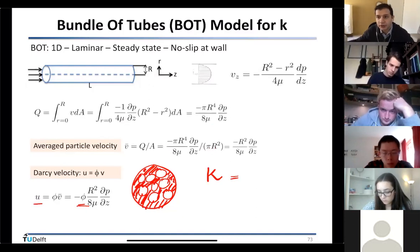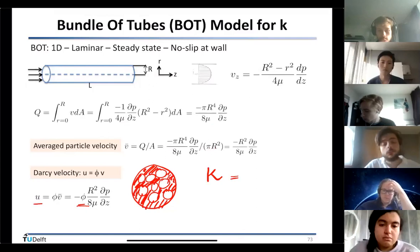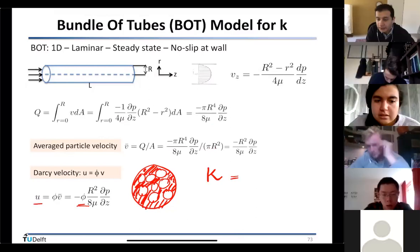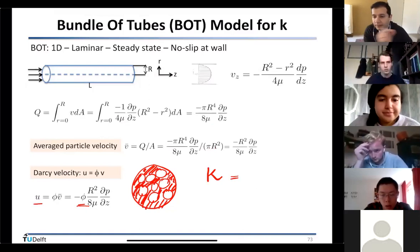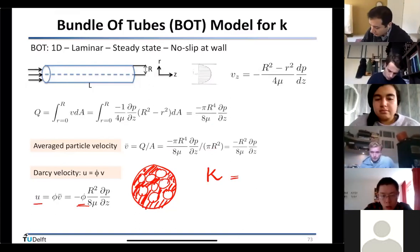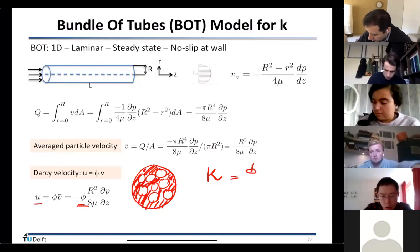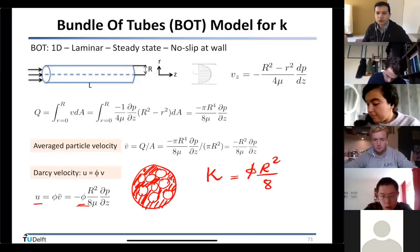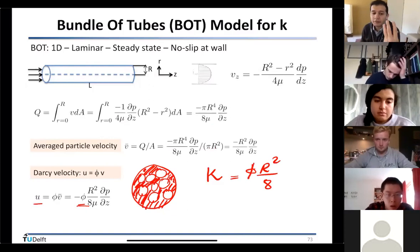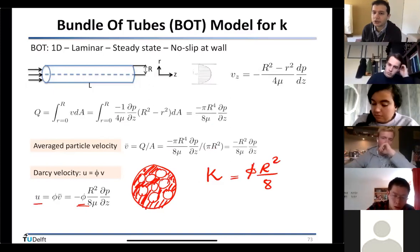Comparing with Darcy's law — u = −k/μ · (dp/dz) — the permeability k equals φ · R²/8. For one tube only (porosity = 1), it reduces to R²/8. For many tubes of radius R with porosity φ, permeability is φ · R²/8. You might wonder: how different is one tube from a real sand pack?